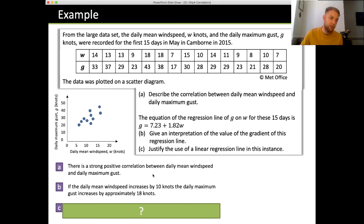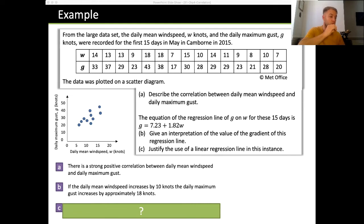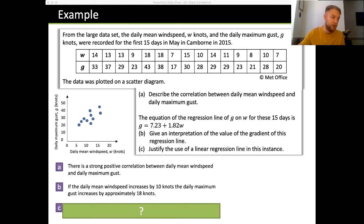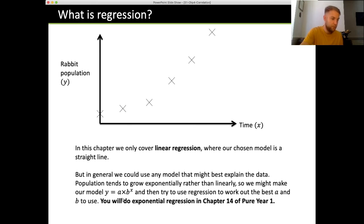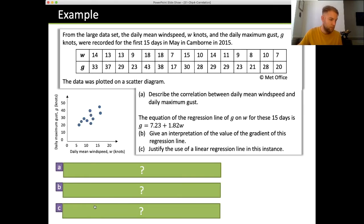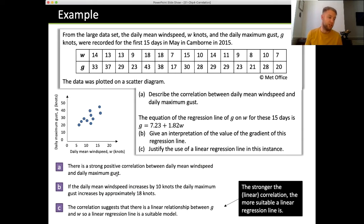To justify the use of a linear regression line: the closer the data looks to a straight line, the more justification there is for using a linear model. The stronger the correlation, the more justification there is. The strong correlation suggests there is a linear relationship between G and W, so a linear regression line is a suitable model. The stronger the linear correlation, the more suitable a linear regression line is.